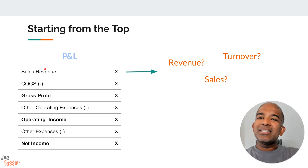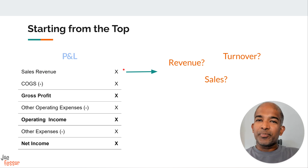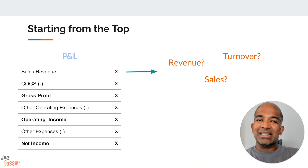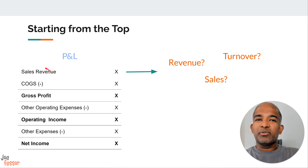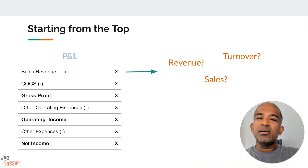Now this is where things can get a bit tricky because there are a few different terms that essentially mean the same thing. You might hear it called revenue, sales, or even turnover. But they all refer to the total amount of money a company earns from its core business activities, usually from selling goods or services. And here's another term you might encounter — the top line. This refers to revenue because it sits right at the top of the income statement. For example, for a bakery, the top line would be the total money earned from selling bread, cakes, and pastries.